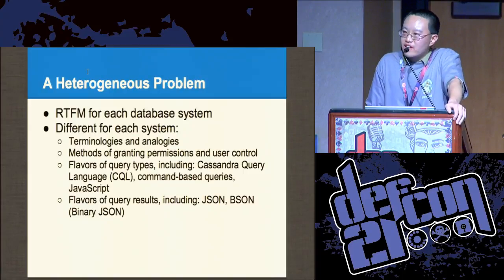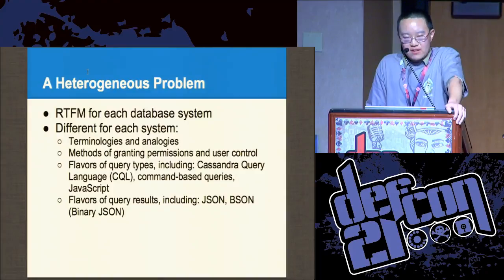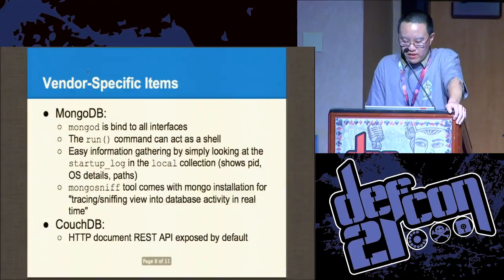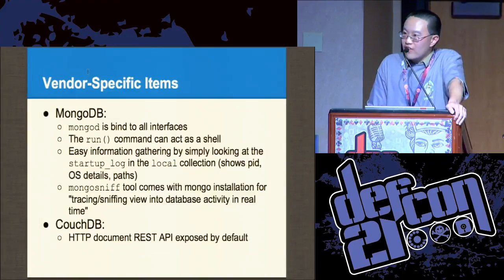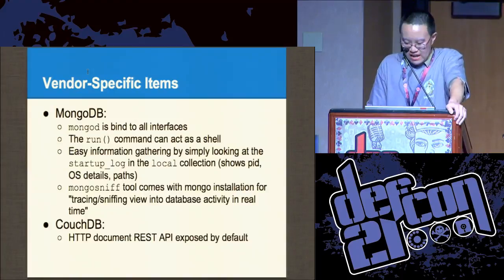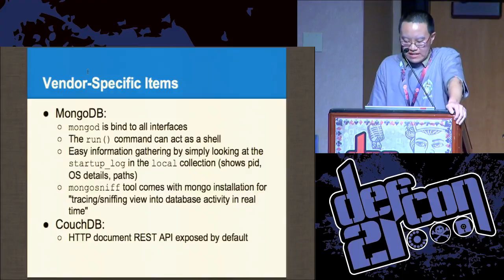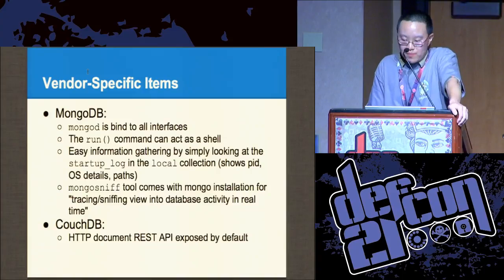Outputs include JSON and even binary JSON. What does that have to do with security? It infers a problem known as complexity. In order to really understand the problems with NoSQL, you have to read each and every documentation individually because different systems have different features, different inputs, different outputs. Even MongoDB has vendor-specific items — MongoDB is actually bound to all interfaces when you take it out of the box. You can look at process information in the local collection. In CouchDB, HTTP is actually open by default.